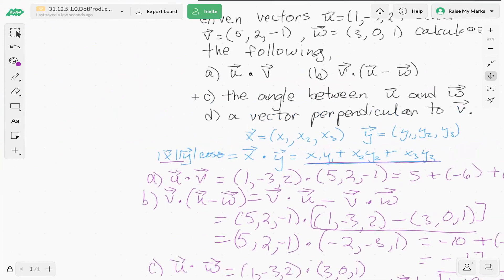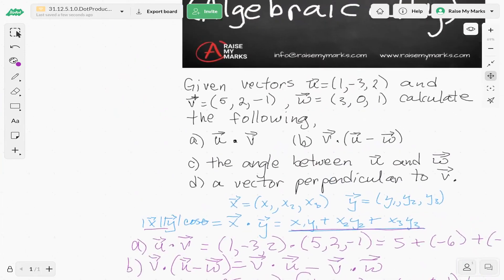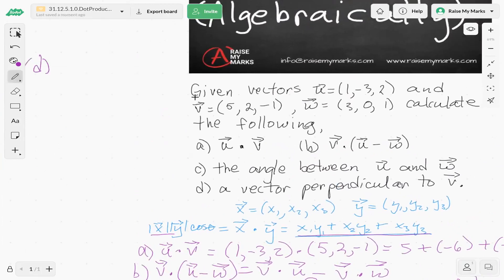All right. So now let's do part d. So a vector perpendicular to v. So the dot product, remember, if two vectors are perpendicular and we take their dot product, then the value is going to be 0. So we're looking for a vector x such that v dot x equals 0. Well, let's use these coordinates for x: x1, x2, and x3.